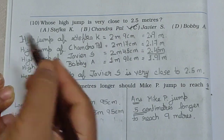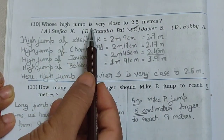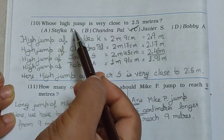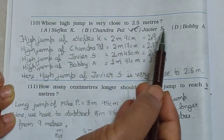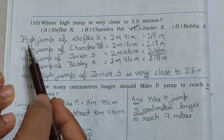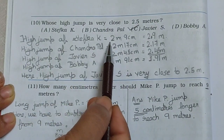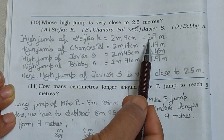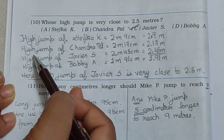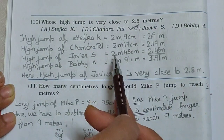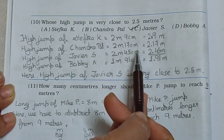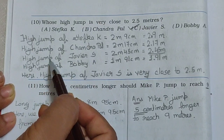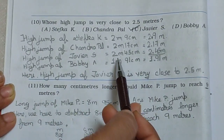Now see, first of all see the question: whose high jump is very close to 2.5 meters? Here options are given: Stavka K, Chandrapal, Javios S, and Bobby A. Now here I have written high jump of Stavka K is equal to, from the table, 2 meter 9 centimeter. If we convert into meters then we get 2.9 meter. High jump of Chandrapal is equal to 2 meter 17 centimeter. If we convert into meters then it is equal to 2.17 meter. Now high jump of Javios S is equal to 2.45 meter.